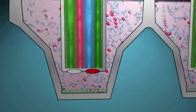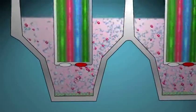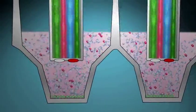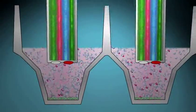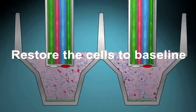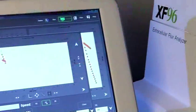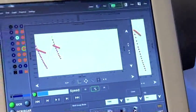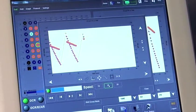When the instrument detects a 10% drop in oxygen or a similar change in proton concentration, the sensor cartridge rises, allowing the medium to restore the cells to baseline. This is how we can make repetitive measurements to create time-resolved kinetic data for each well.